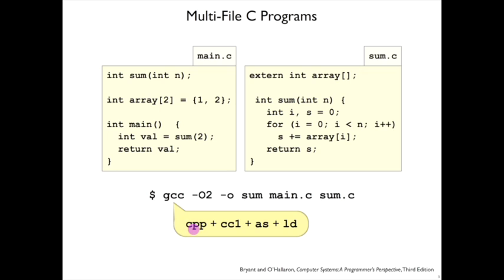The first step is the C preprocessor, and we'll look at that step a little bit today. Then there's the compiler proper, the CC1 step, which is the part that takes the C code, does the optimizations, and generates assembly code.